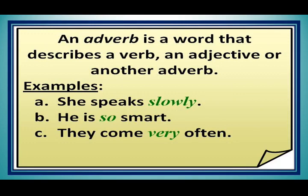Today we are going to have a review of our grammatical topics that we have already discussed in detail. First of all, we will start with adverbs. An adverb is a word that describes a verb, an adjective, or another adverb. For example: 'She speaks slowly' — slowly is an adverb. 'He is so smart' — so is an adverb. 'They come very often' — very is an adverb.